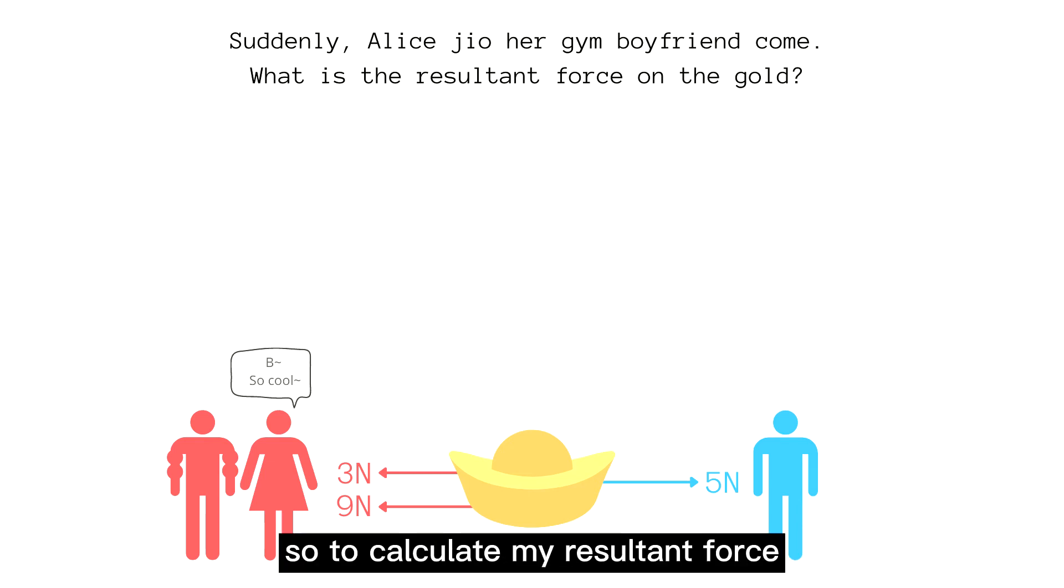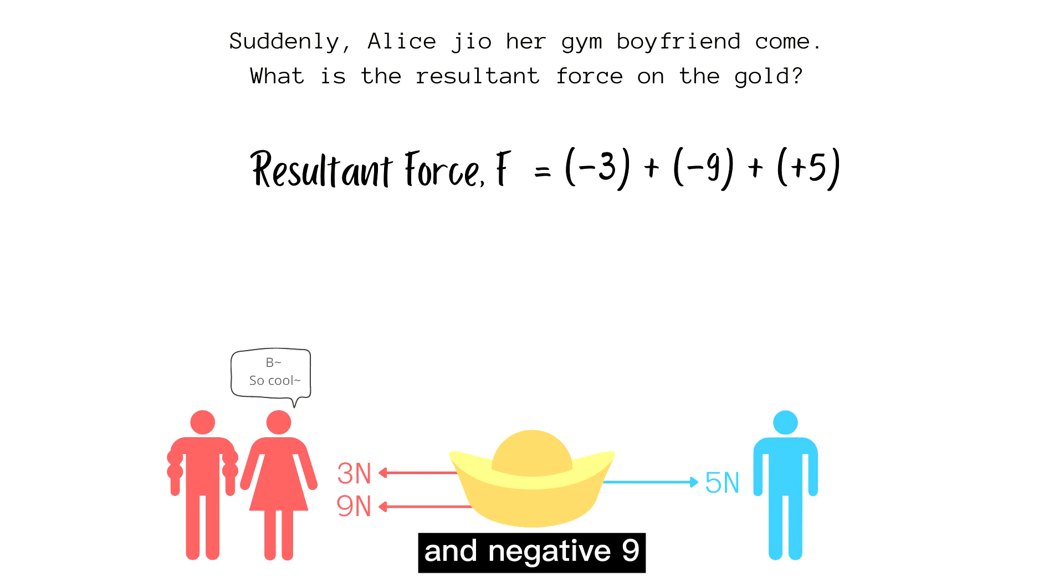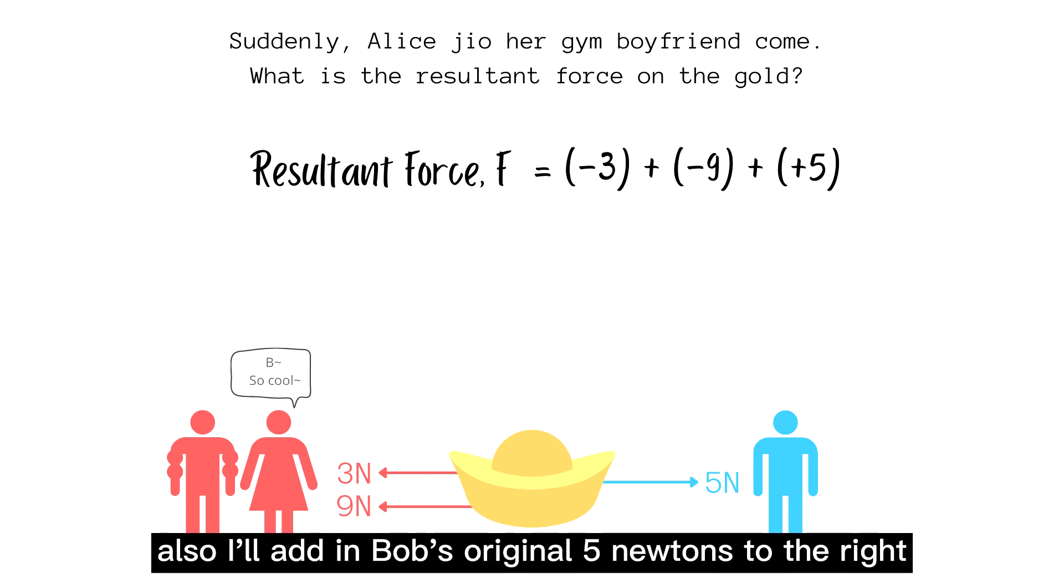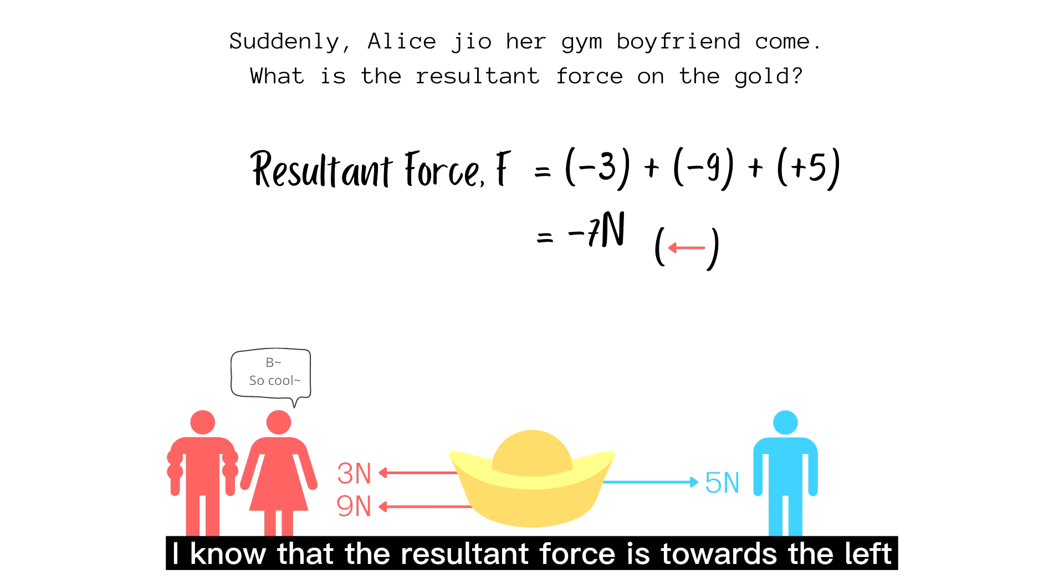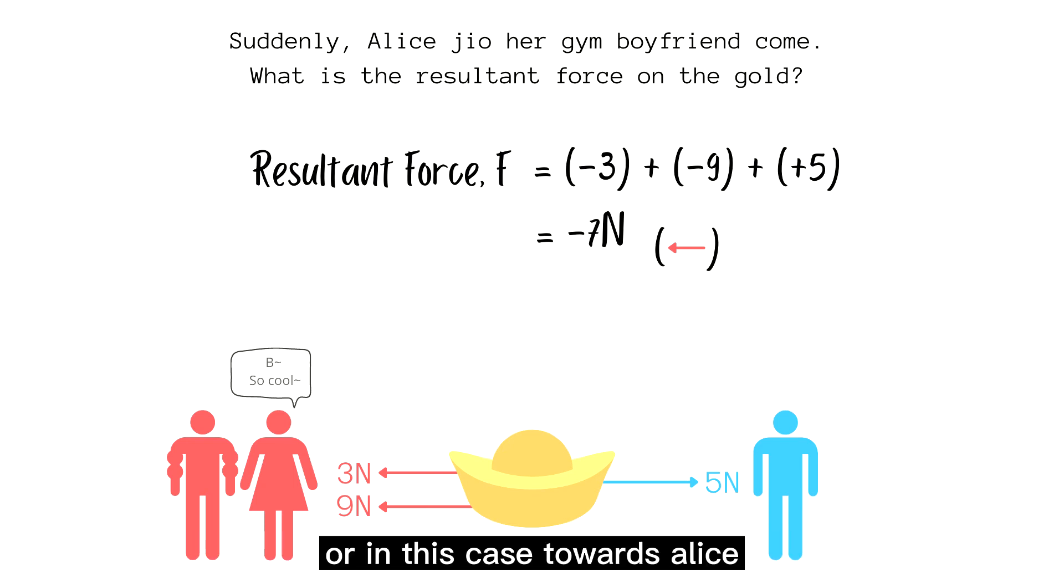So to calculate my resultant force, I will add negative 3 and negative 9 and also I will add in Bob's original 5 Newtons to the right. In the end, I'll get an answer of negative 7 Newtons. And since the resultant force is negative, I know that the resultant force is towards the left or in this case towards Alice.